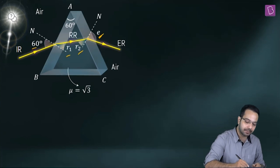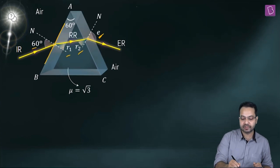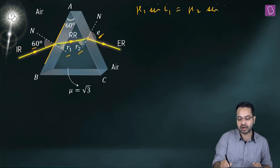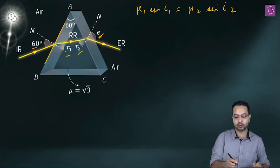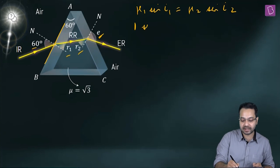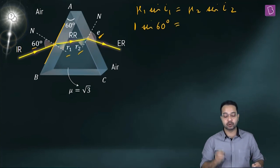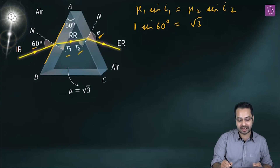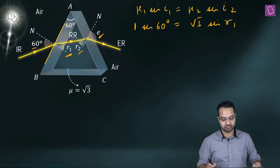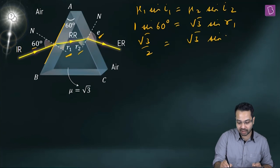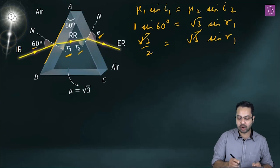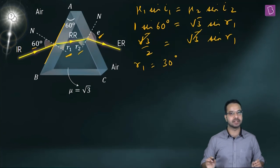Applying Snell's law at the first surface: μ1 sin(i1) = μ2 sin(i2). Light goes from air to prism, so 1 × sin(60°) = √3 × sin(R1). sin(60°) = √3/2, so √3/2 = √3 sin(R1), giving R1 = 30°.